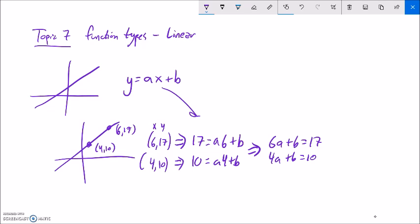And now notice what I do. I have the system to solve. What I can do is just subtract one equation from the other. So 6a minus 4a is 2a. b minus b is 0. That's the reason why I subtracted, to cancel out one of the variables. So 17 minus 10 is 7, divided by 2. So I know that a is 17 halves.